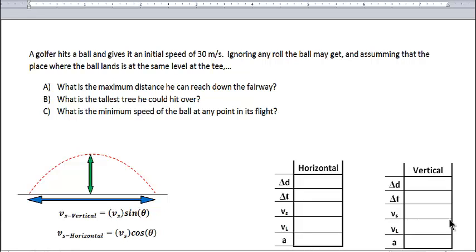Another class 2 problem here. A golfer hits a ball and gives it an initial speed of 30 meters per second, ignoring any roll that the ball may get, and assuming that the place where the ball lands is at the same level as the tee. It asks us three questions. The fact that the ball lands at the same height level as the tee tells us that it is a class 2 problem. You've got to read and figure out those things.